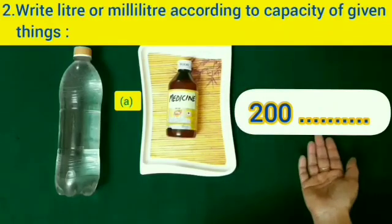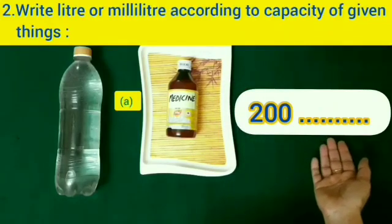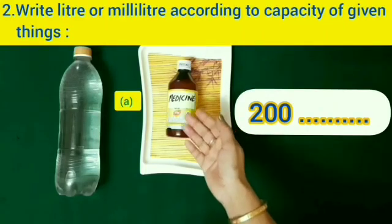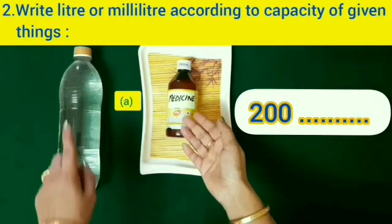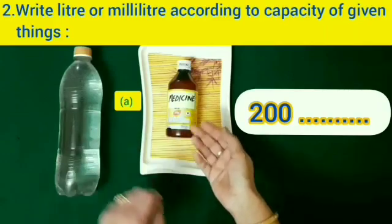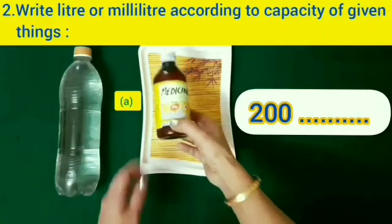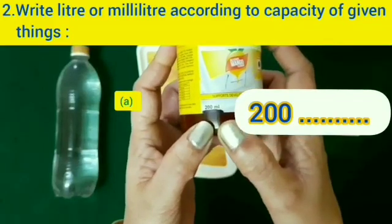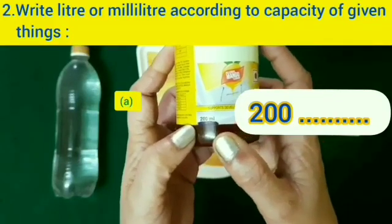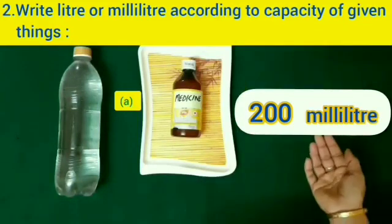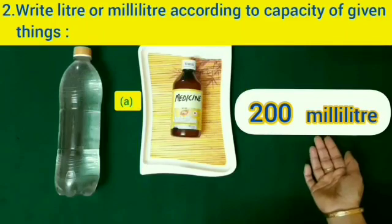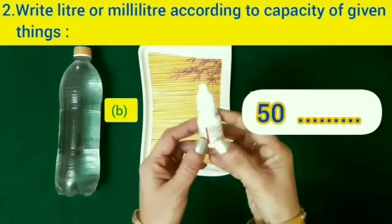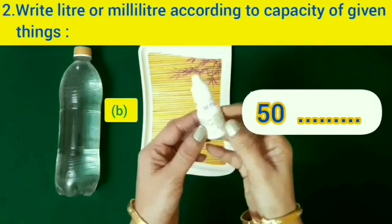Now we are going to do question number two: write liter or milliliter according to the capacity of the given things. This medicine bottle is smaller than the one-liter water bottle, so its capacity is less. Its capacity of 200 milliliters is also written on it, so we will write milliliter in the blank.